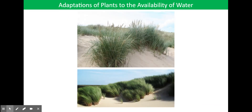Marram grass specialises in living on sand dunes. The conditions are particularly harsh because any water in the sand drains away quickly. The sand may be salty and the leaves are often exposed to very windy conditions. Marram grass is a xerophyte — a plant adapted to living in arid conditions.